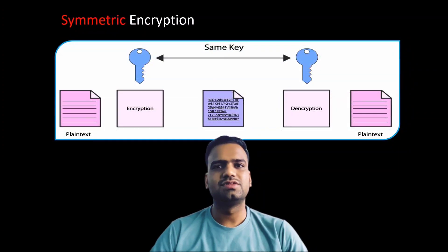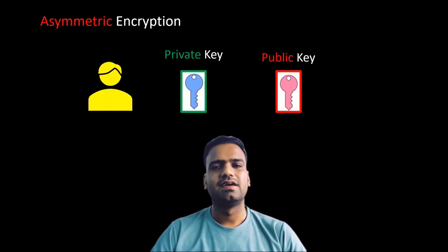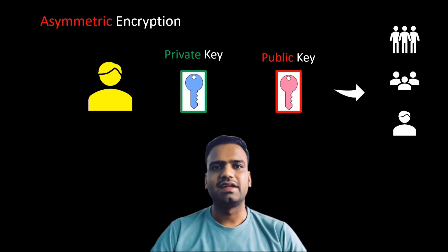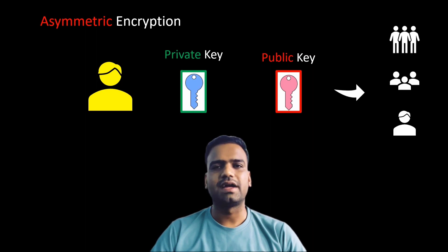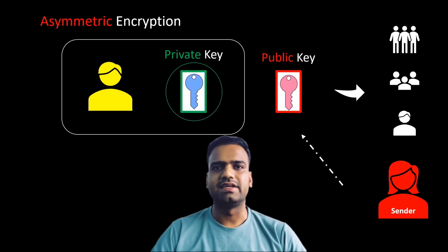In symmetric encryption, both the sender and receiver use the same key to encrypt and decrypt data. Asymmetric encryption uses a public key and a private key. The public key can be shared with anyone, but the private key must be kept secret. To encrypt a message, the sender uses the public key of the receiver, and to decrypt a message, the receiver uses their private key.